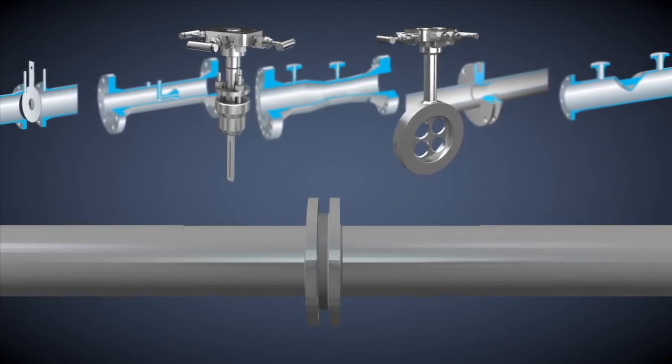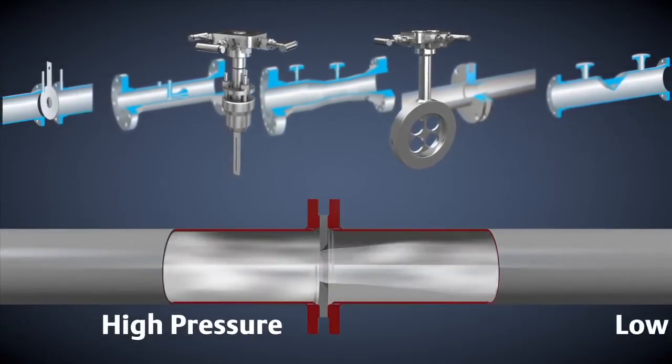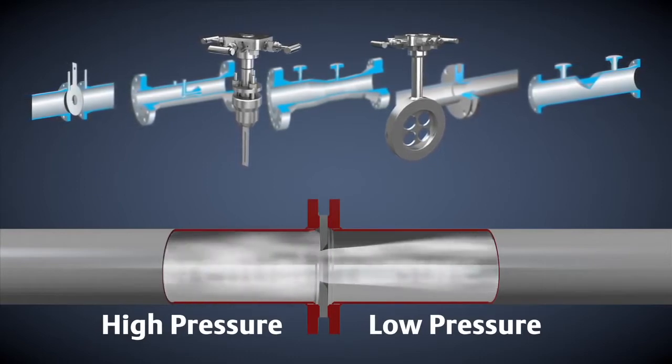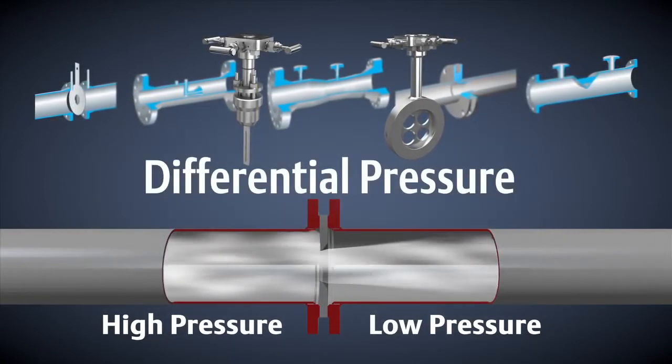All of these different primary elements have one thing in common: they constrict the flow in a pipe causing a pressure drop from one side to the other. The difference in pressures is the differential pressure. The square root of DP is proportional to the flow rate.